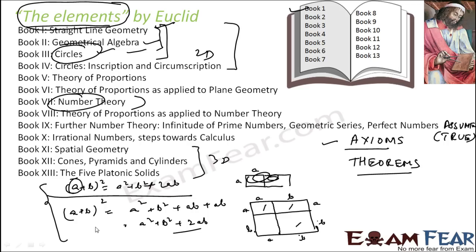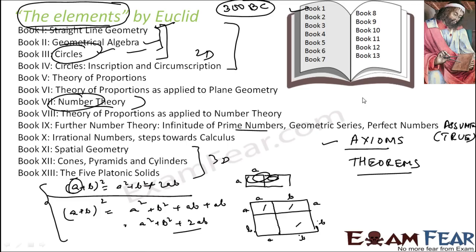The algebraic expression is proved using geometry — that is the power of this book. It talks about number theory, geometry in both 2D and 3D, and relates algebra with geometry. The book 'Elements' was written by Euclid in 300 BC, and it is a collection of definitions, postulates, theorems, and proofs. The whole book is based on axioms, postulates, and theorems — axioms and postulates are similar but not the same.